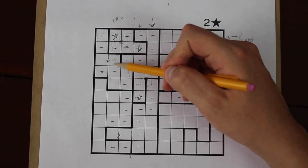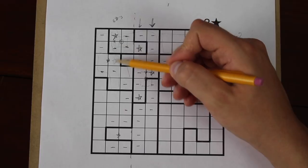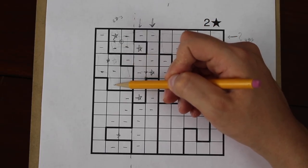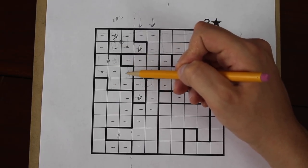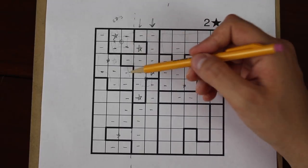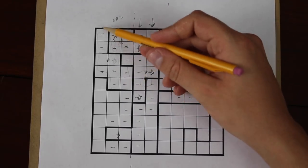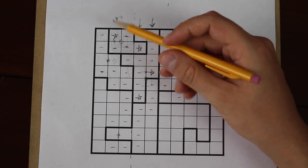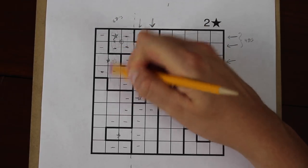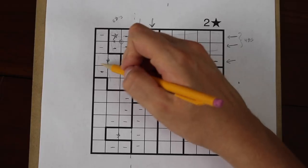If this star was here, there'd be two stars in this column that would block off this spot and block off that spot. What that means is that there'd be no room for a second star to appear in this region. That's impossible, so the star must go on the other side.